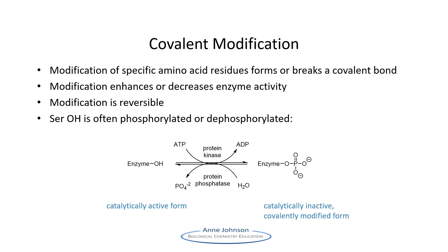Covalent modification of amino acid residues most often involves phosphorylation and dephosphorylation. Other types of covalent modification include acetylation, adenylation, myristoylation, farnesylation, carboxylation, sulfation, and ubiquitination. These are used to make the enzyme more or less active in response to signals within the cell and to external signals, such as from hormones.